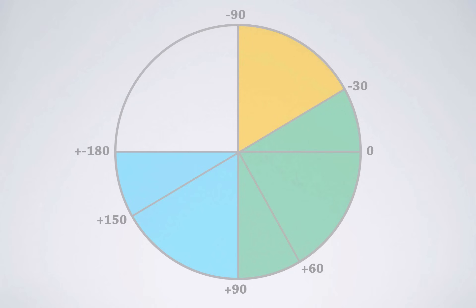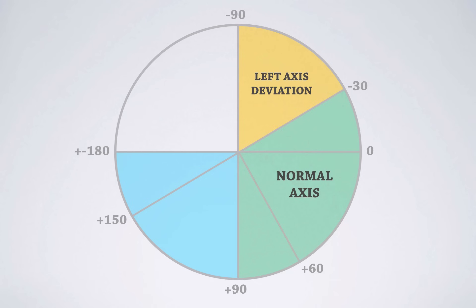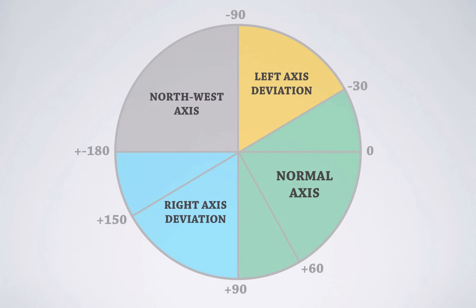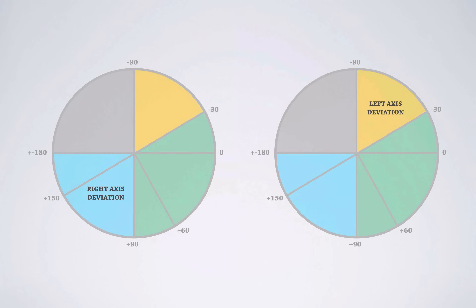To recap: if the main cardiac vector points from minus 30 to plus 90 degrees, that's a normal axis. If it points from minus 30 to minus 90 degrees, that's left axis deviation. If it points from plus 90 to 180 degrees, that's right axis deviation. And if it points from plus or minus 180 to minus 90 degrees, that's a northwest axis. For clinical purposes, you should focus on right and left axis deviation, as a normal axis doesn't help much diagnostically, and a northwest axis is very rare.